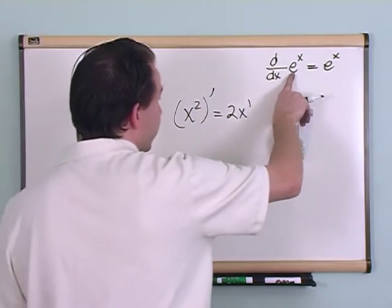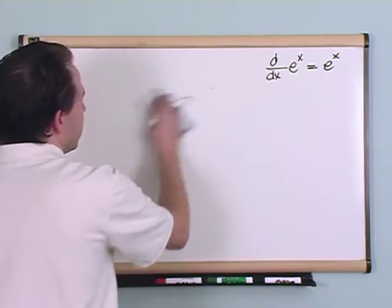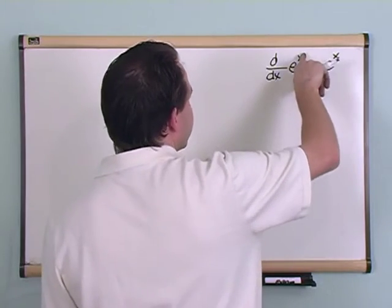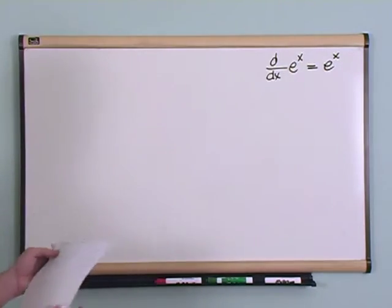This is the derivative of x raised to a number. This is a number raised to x, and specifically this is a very special number, it's e. So, e raised to the power of x, take the derivative, get the same old thing back. It really isn't that bad.